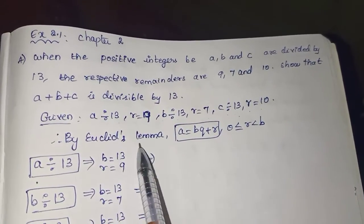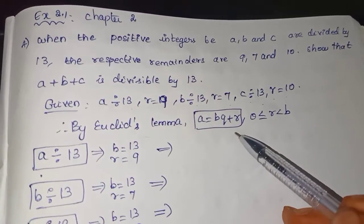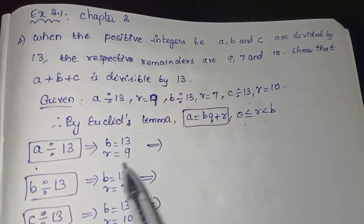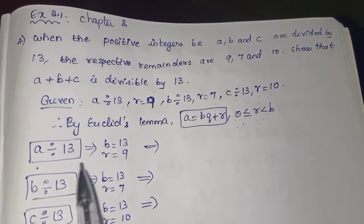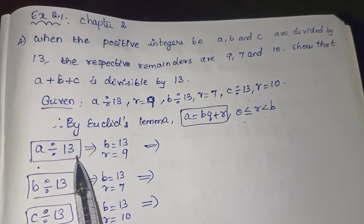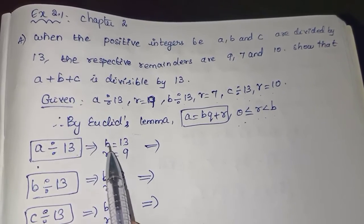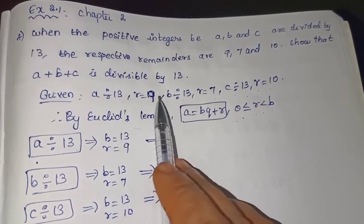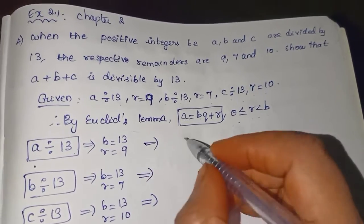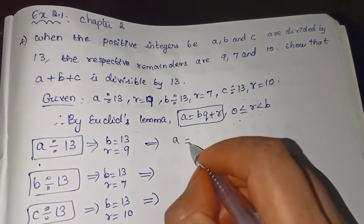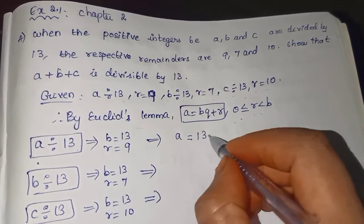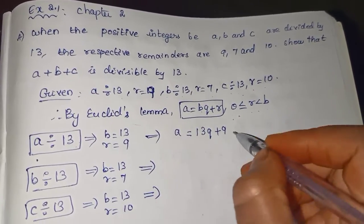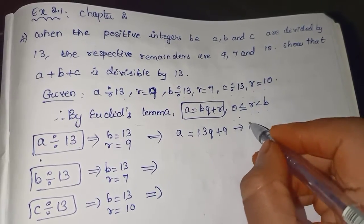By Euclid's lemma, A is equal to B·Q plus R, where 0 is not equal to R, less than B. From the given, A divided by 13 means the divisor B is 13 and the remainder is 9. So we write A is equal to 13Q plus 9. This is our first equation.